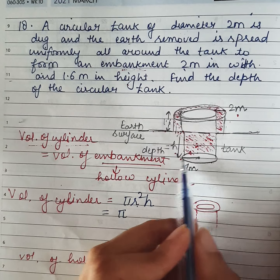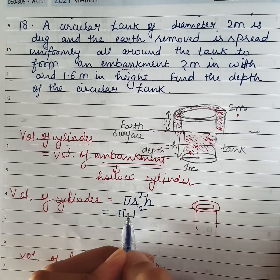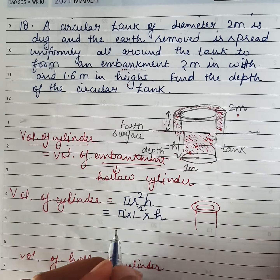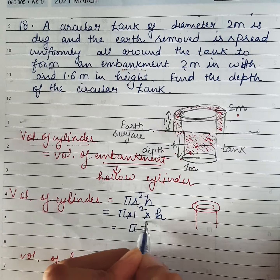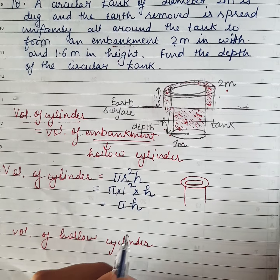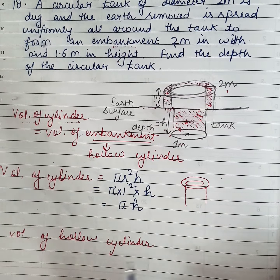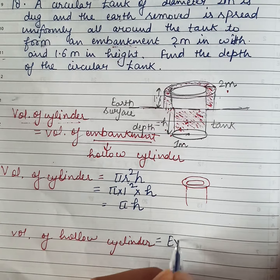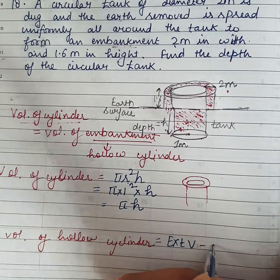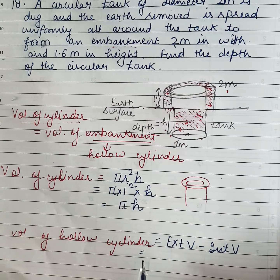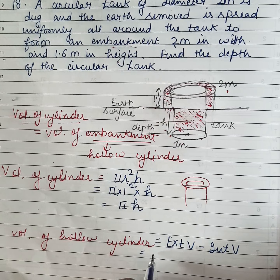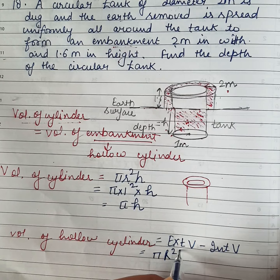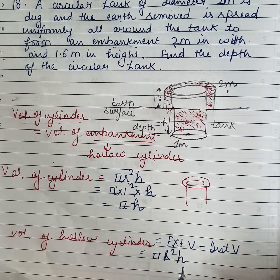Radius is 1 meter, so r squared is 1 squared. The depth h is not given — that is what we need to find. So volume of cylinder = pi into h. Now coming to the hollow cylinder. For hollow cylinder volume, the formula is: external volume minus internal volume. External volume is pi capital R squared into H, the height of the embankment.